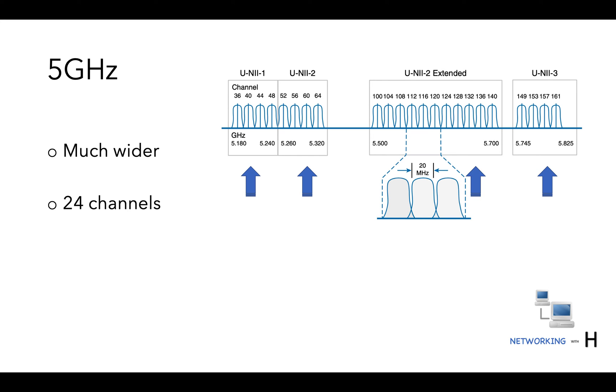Each channel is allocated a frequency range that does not overlap the frequencies allocated for any other channel. In other words, the 5 gigahertz band consists of non-overlapping channels.